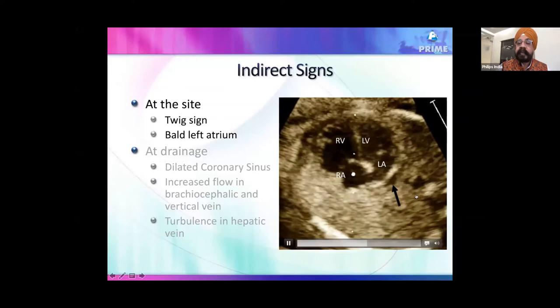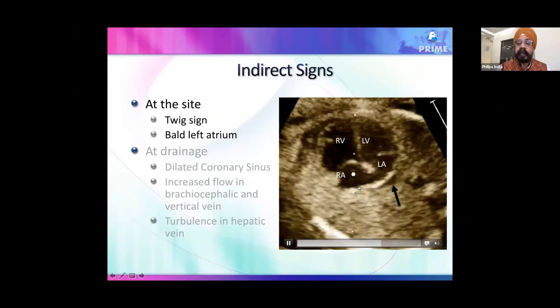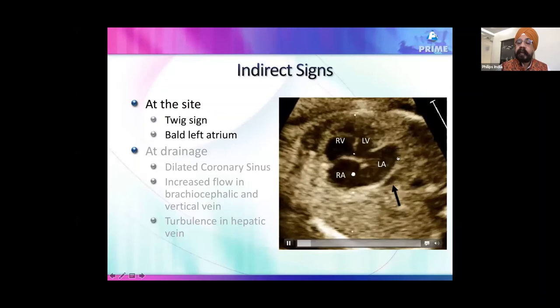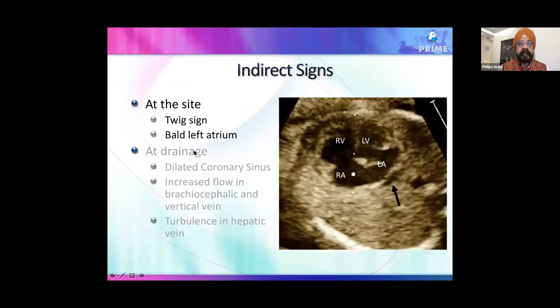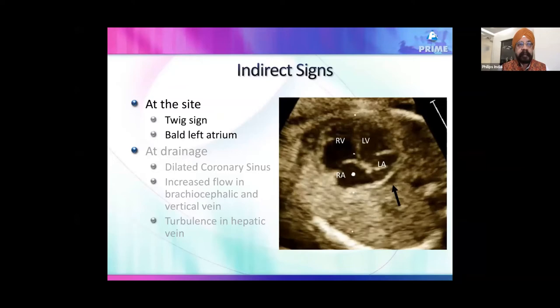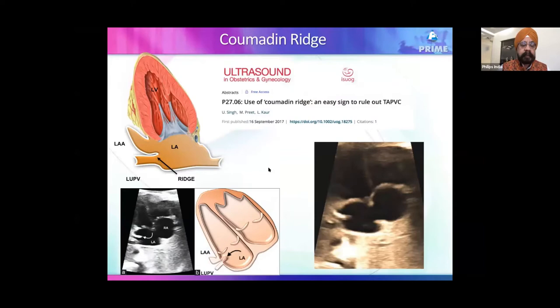Pulmonary veins enter the left atrium from four sides, giving it a box-like rather than rounded shape. If the left atrial wall becomes rounded — called 'balding' — that suggests TAPVD. Depending on the drainage path, other indirect signs include dilated coronary sinus, increased flow in the brachiocephalic vein, and turbulence in one of the hepatic veins in infracardiac TAPVD.